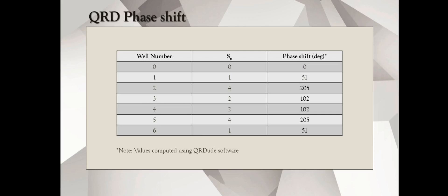Diffuser also diffuses temporally in addition to spatial diffusion. I've explained it before. Here, it alters the phase of the incoming signal. The well number 0 doesn't change any phase, whereas well number 1 alters the phase by 51 degrees, well number 2, 205 degrees, and so on and so forth. These values I computed using the QRDude software.